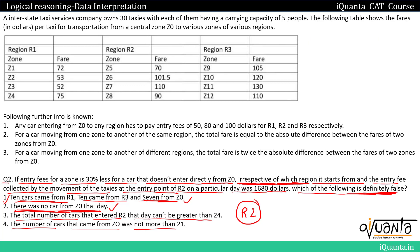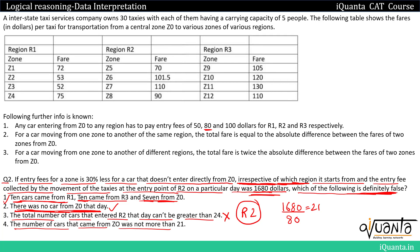Option 3 says the total number of cars that entered R2 that day can't be greater than 24. But from option 1 we already saw 10 + 10 + 7 = 27 cars giving exactly 1680 dollars. So more than 24 cars can still produce 1680 dollars, meaning option 3 is definitely false. Option 4 says cars from Z0 were not more than 21. Since each Z0 car pays 80, maximum cars from Z0 = 1680 ÷ 80 = 21, so option 4 is correct. Option 3 is the answer — it is definitely false.